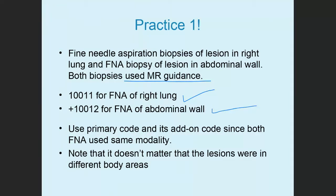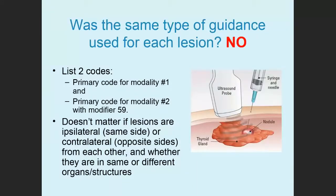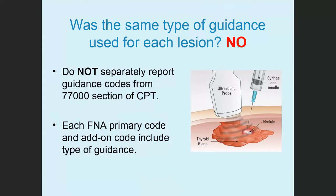In other cases, separate lesions are biopsied using different types of guidance. The guideline for this is to use the primary code for modality number one and then another primary code for modality number two with Modifier 59. It doesn't matter whether the lesions are ipsilateral or contralateral — same side or opposite side — or from a different organ system or structure. Since the codes themselves list the type of guidance, you do not list an additional code for guidance from the radiology section beginning with 77,000, as each FNA code already includes the guidance.